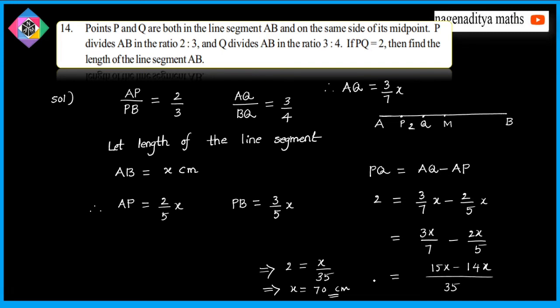The rule of the line segment here: the pattern is AP/PB = 2:3 and AQ/BQ = 3:4. That is the pattern on the line segment. So the key relationship used was PQ = AQ − AP.